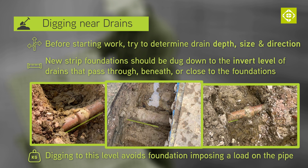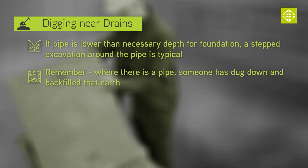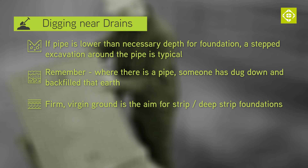The invert level is the bottom of the pipe. Digging down to this level means the foundation will not impose a load on the pipe. Say, for example, the ground is generally satisfactory at one meter deep for your proposed foundation, but there is a drainage pipe lower than this — a stepped excavation is the usual way of digging down to the invert level. It's also worth bearing in mind that if there's a drainage pipe at a lower depth, someone has already dug that ground out once and backfilled it. We should always look for firm, undisturbed ground for strip or deep strip foundations.